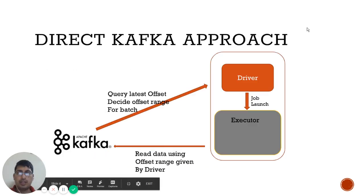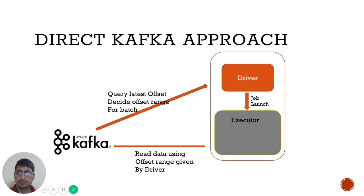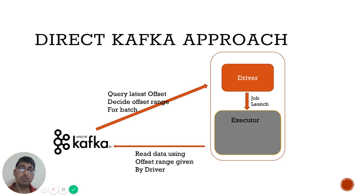Now let's understand the direct Kafka approach. In this approach, the driver contacts Kafka directly and gets a list of offsets — the offsets of the messages it needs to read. Using those offsets, it creates respective jobs and launches them on executors. Each executor will have a range of messages to process, reads those messages from Kafka, processes them, and keeps checkpointing the processed messages to a local directory.